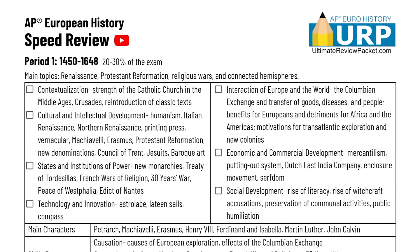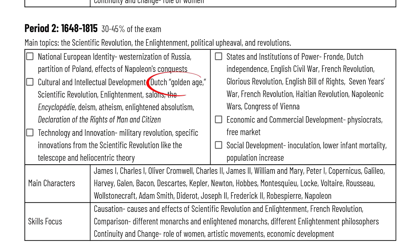We have just finished Period 2 — everything from 1648 to 1815. It's time to grab that speed review packet, pause the video, circle the terms that you don't know, and check off the ones that you do.